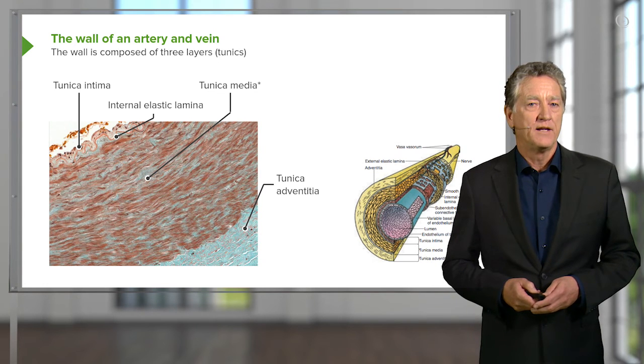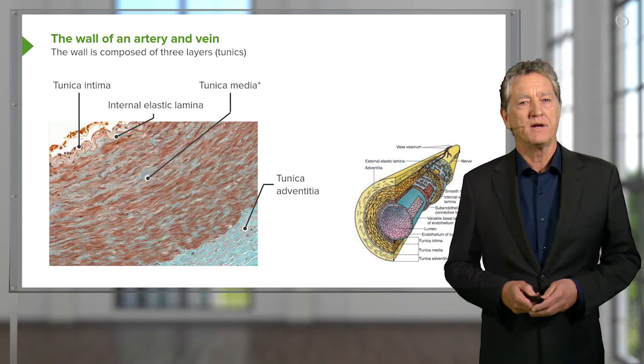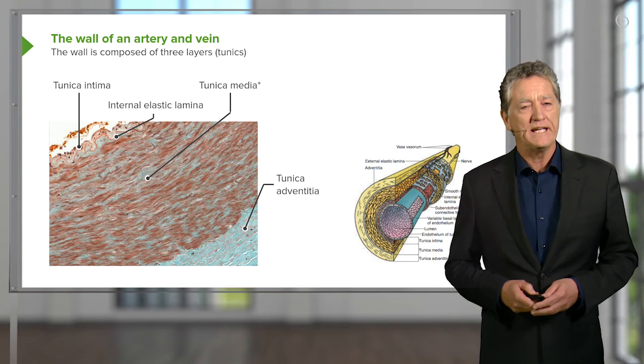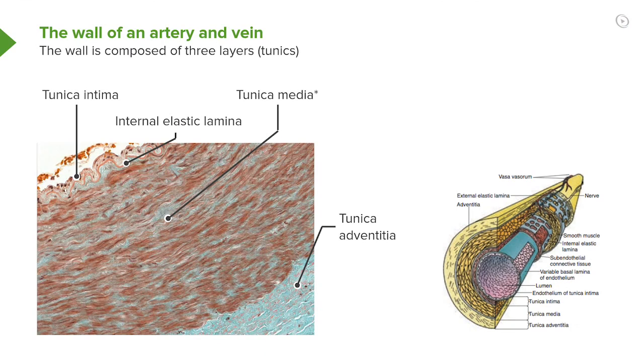Now, often inside large arteries in particular, there is a little layer of elastic tissue called the internal elastic lamina. If you look carefully at this slide, you can see this little wiggly line, clear wiggly line running through. That's the internal elastic lamina.